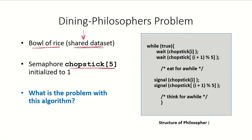If there are five chopsticks, we have an array of five semaphores and all of these are initialized to one. Here is the structure of the process for philosopher i: the philosopher will wait for chopstick i and wait for chopstick i plus 1 modulus 5.